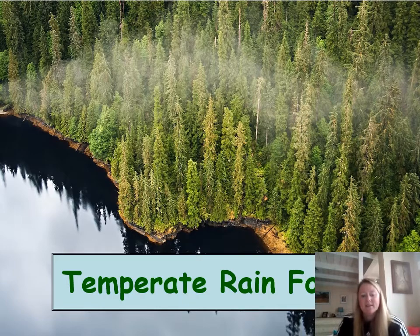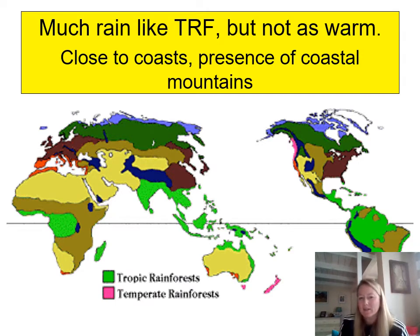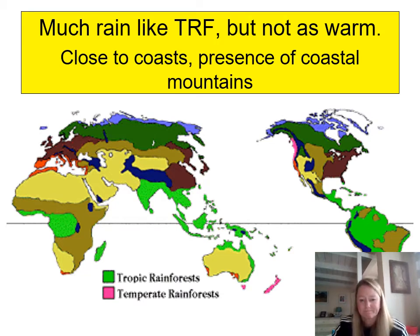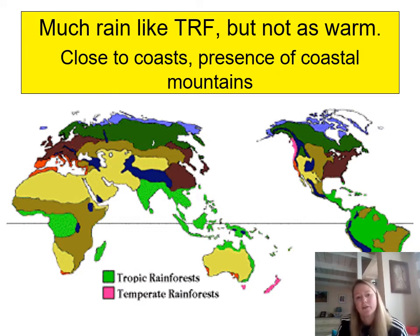The temperate rainforest is similar to the tropical rainforest — you do get rain — but it's not as warm. These forests tend to be found close to coastal mountains, much nearer to the coast than tropical rainforests. For example, there is temperate rainforest near Washington and Canada in the Vancouver area, which is of course much colder than Ecuador, where tropical rainforests are found.